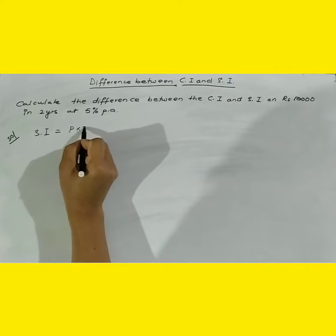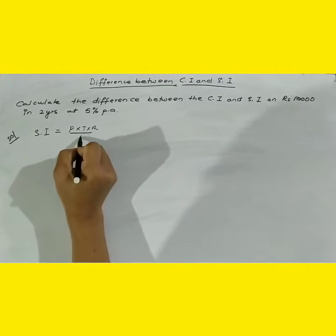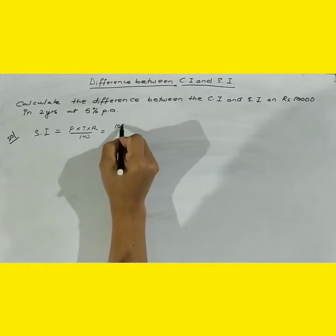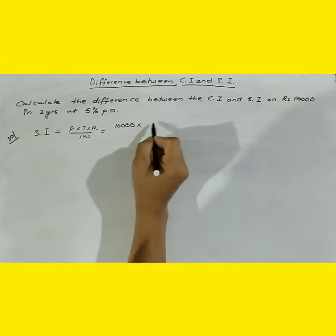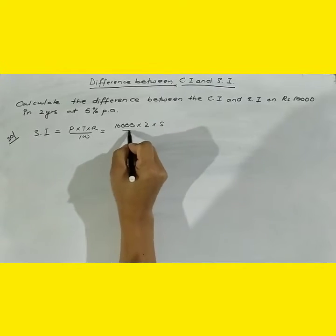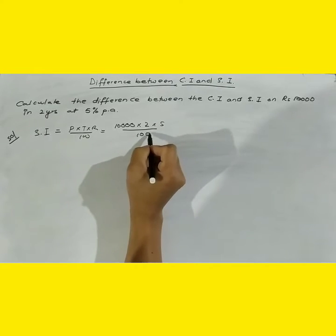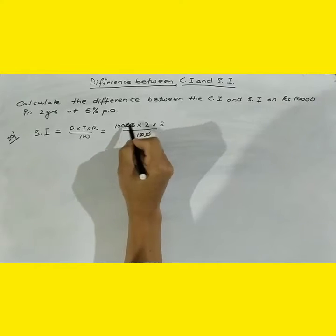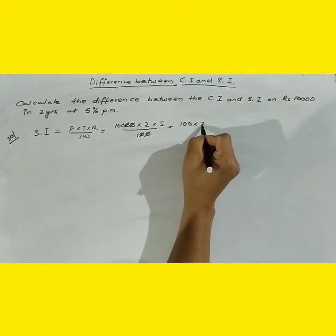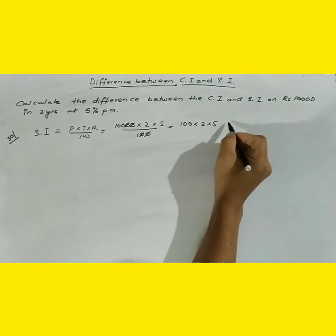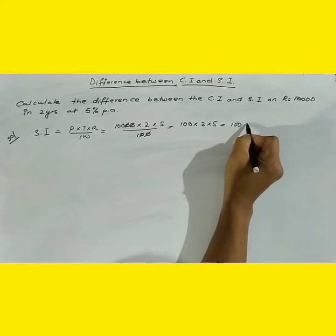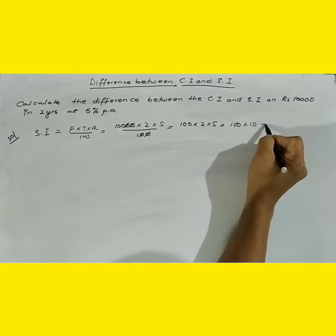Simple interest equals to P into time into R upon 100. So that's 10,000, principal is 10,000, and time is 2 years, and rate is 5%. So 100. 2 into 5 equals to 10.